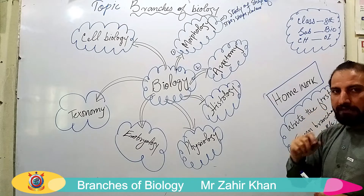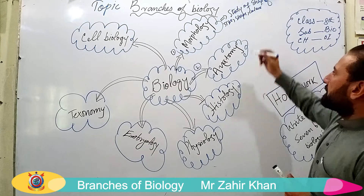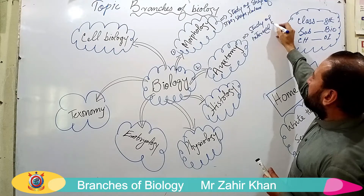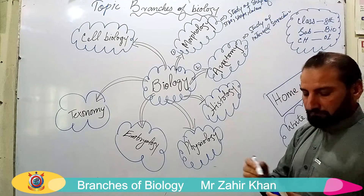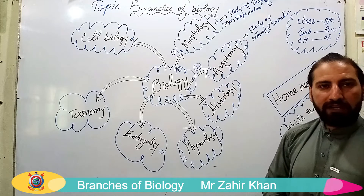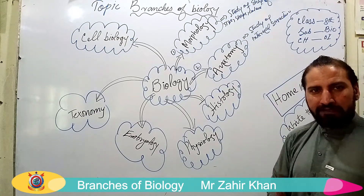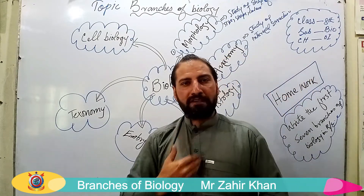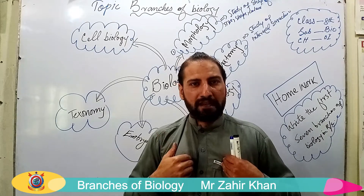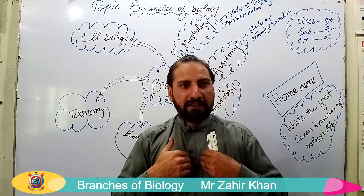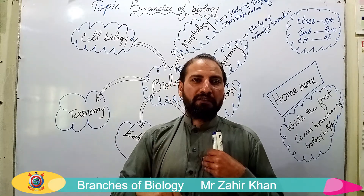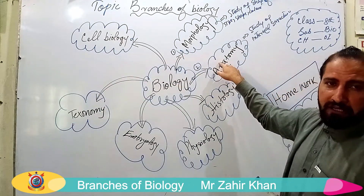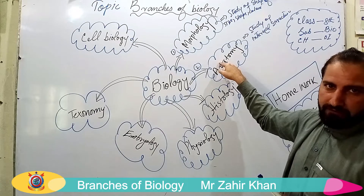The second branch of biology is anatomy. Anatomy means the study of internal structure of organisms. In anatomy, we dissect the living organism to study its internal organs. For example, if we open the chest cavity of a human body and study the organs inside the thorax, that process is called anatomy. The person who studies this is called an anatomist. Anatomy is the branch of biology which deals with the study of internal structure of an organism.